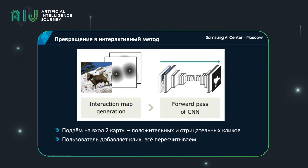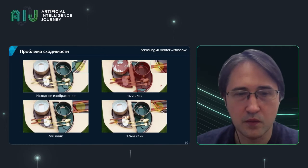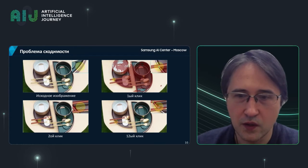We managed to add more interactivity to this method. We realized we have to send two additional images as input to the model containing information on the positive and negative clicks. Once the user makes an additional click, we run the data through the model again. But we faced an unexpected deficiency: quite often, models give unpredictable output and may neglect all the instructions of the user.